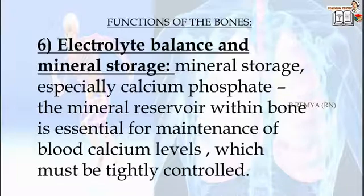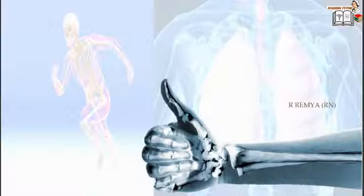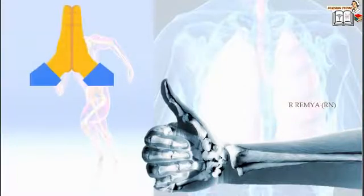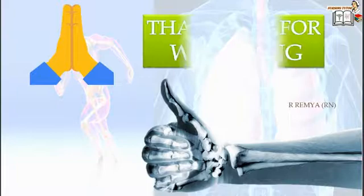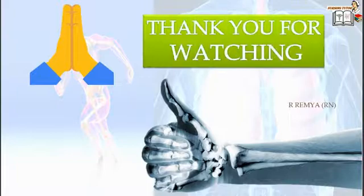The yellow bone marrow of long bones acts as a storage of fats. Bone also buffers the blood against excessive pH changes by absorbing or releasing alkaline salts.